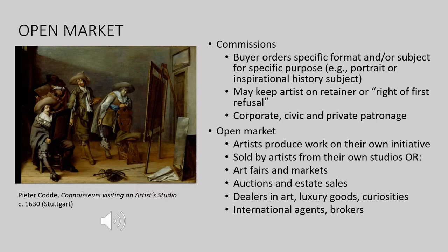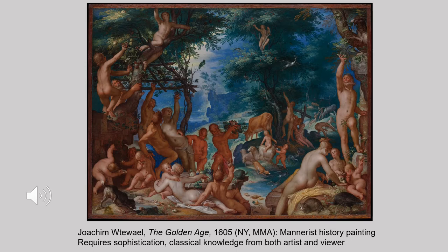A very important aspect of the Dutch art market was that much of the work was produced on spec or for an open market where the artist creates work on his own initiative, not necessarily knowing in advance who the buyer will be. This differs from the traditional commission system and gives more agency to the artist. Art theorists in the 16th and 17th centuries considered history painting to be the supreme achievement, requiring knowledge of figural action, landscape background, and sophistication on the part of the viewer — but it appealed only to well-educated clients, not a broad spectrum of consumers.